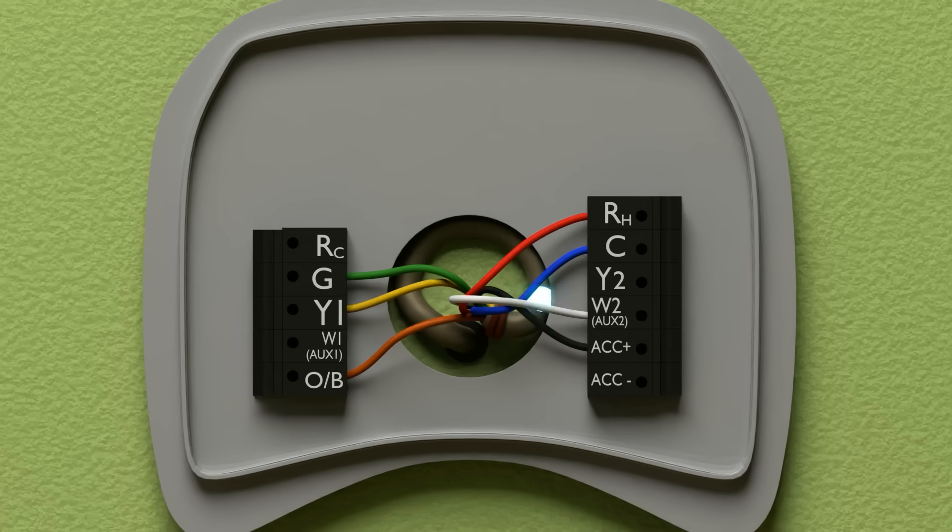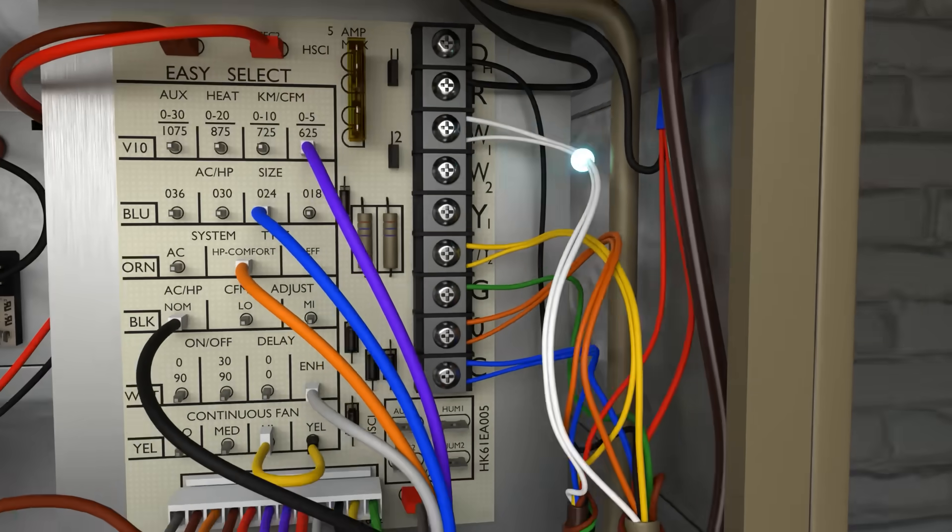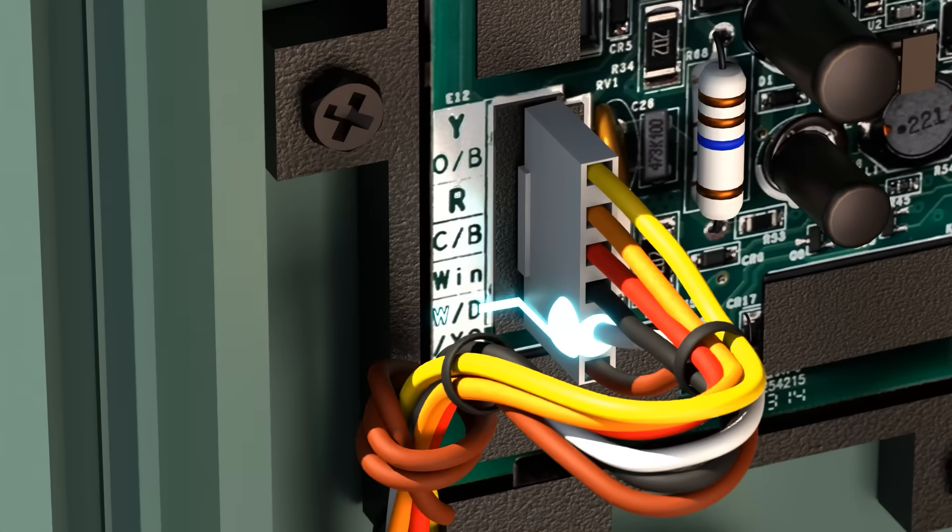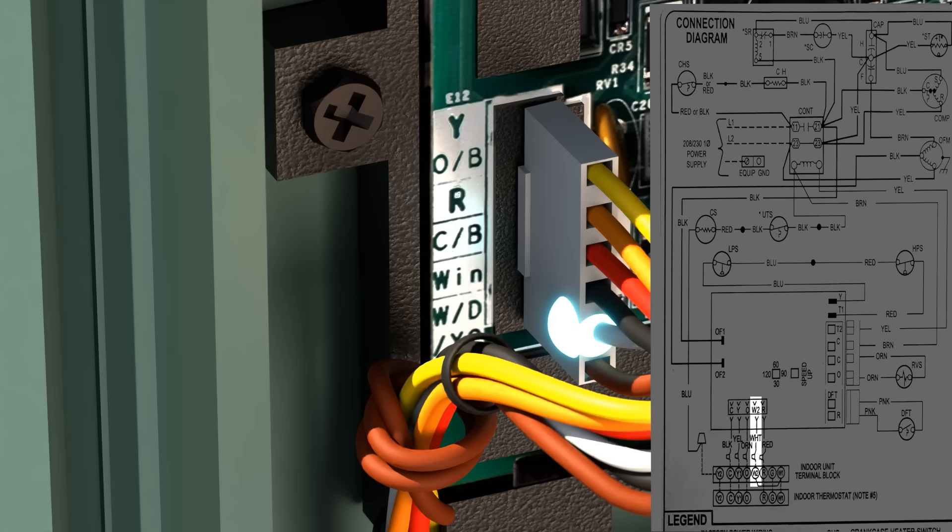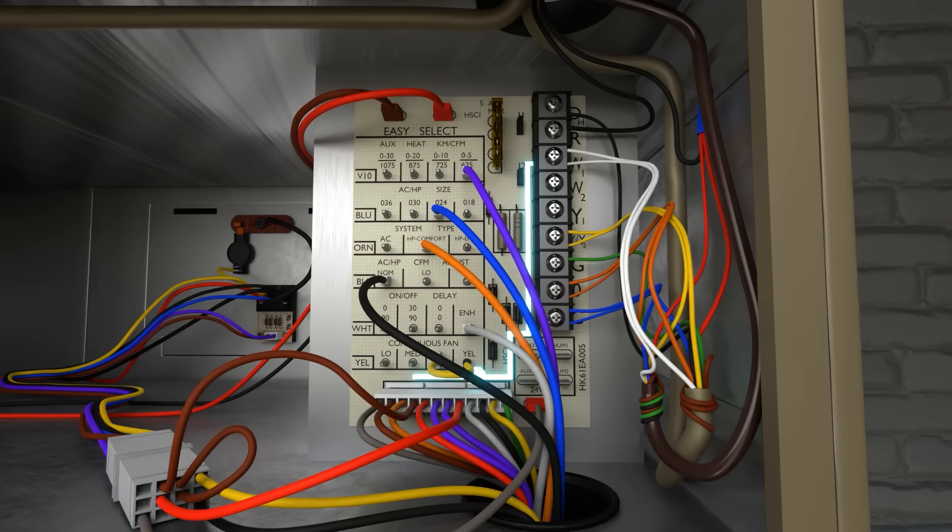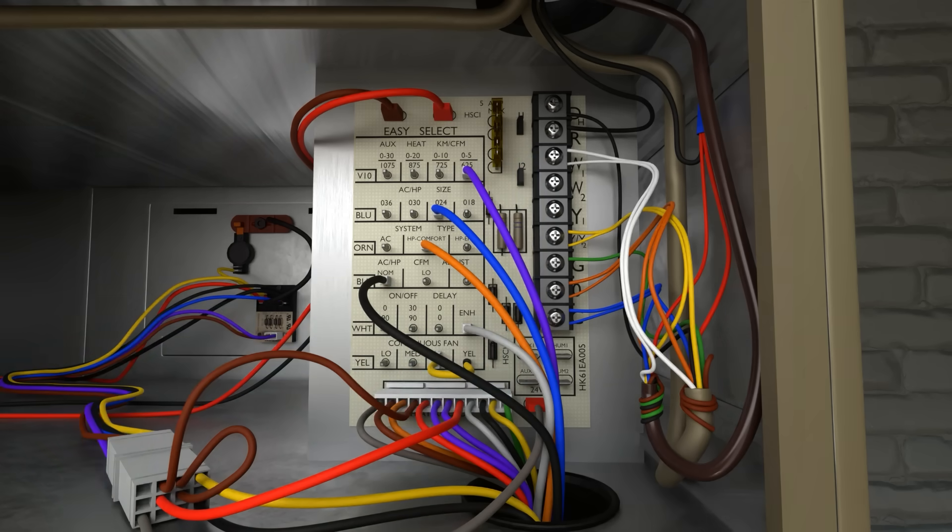Next, we show our auxiliary heat, which is white or W2. Once again, this wire connects to our terminal block on the heat strips and then goes outside and connects to W on our defrost board. This allows the defrost board to backfeed and bring on electric heat as well as the thermostat. So either the thermostat or the defrost board on the outside has the capability of bringing on the electric heat.